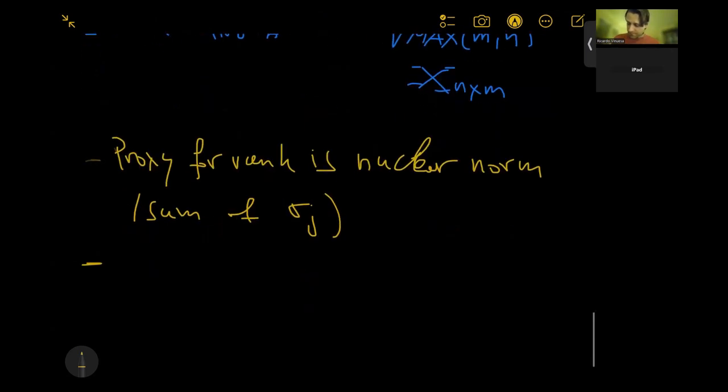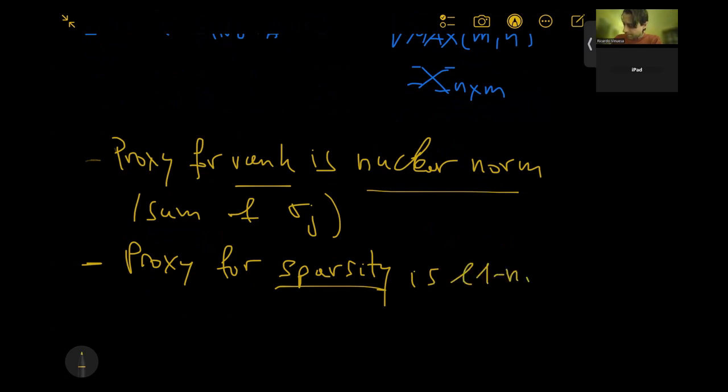The second proxy, so the proxy for sparsity, this was for rank, nuclear norm for sparsity, that means that we have many zero entries in our matrix, is the L1 norm instead of the zero norm, which is the sum of the absolute values.